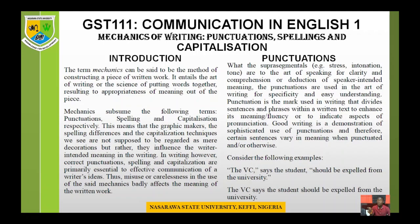In the first sentence, 'released, not to be executed,' the person is supposed to be released — exonerated, not to be killed. But in the second sentence, 'released not, to be executed,' the victim is supposed to be executed — do not release the person. So one sentence puts the person in paradise and the other in hellfire, all because of misuse of the comma.